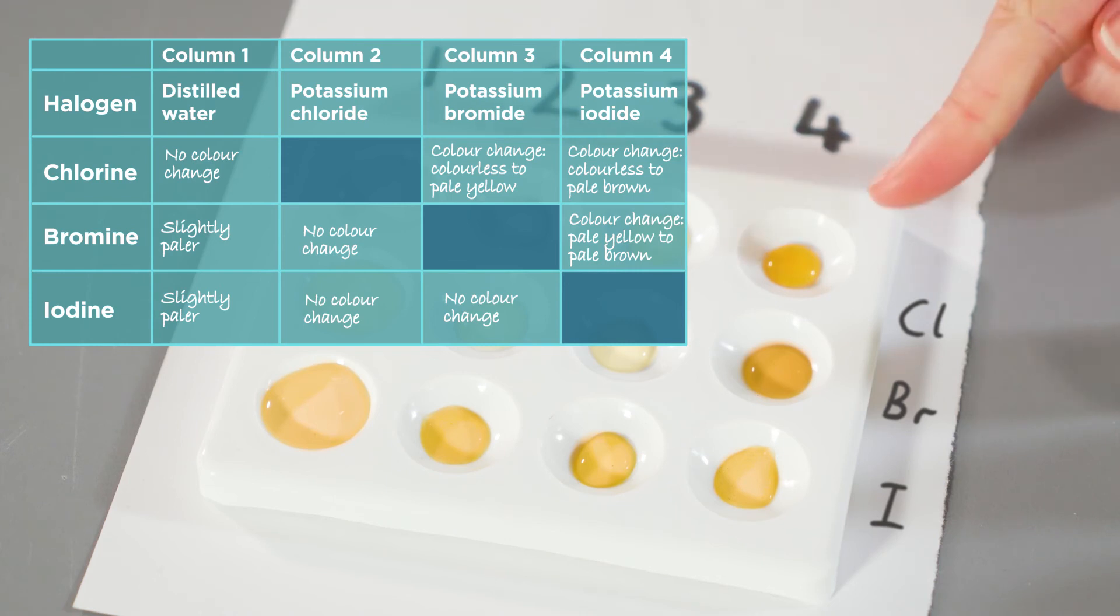Here we can see that there has been a colour change here and here. In each case, the iodide ion has been displaced by the chlorine and by the bromine that was added.